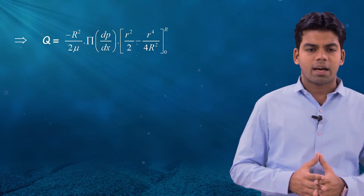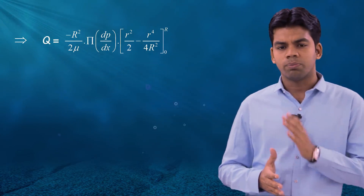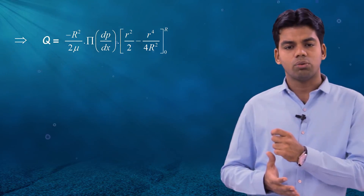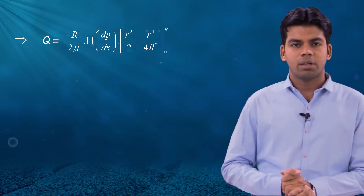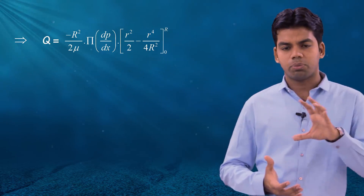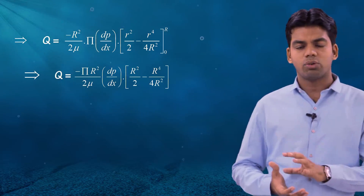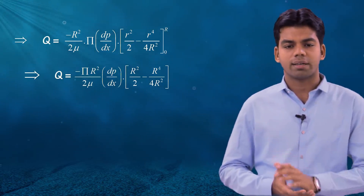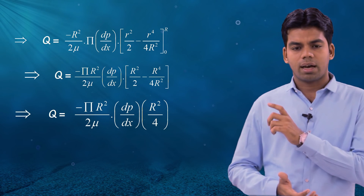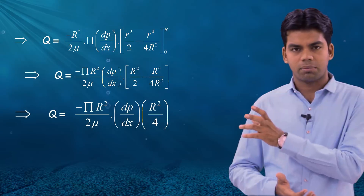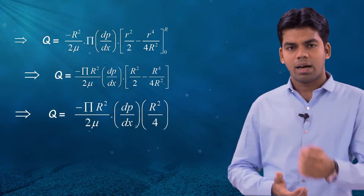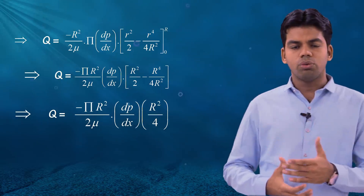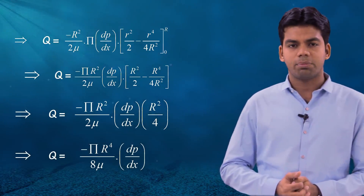Integrating: Q = −(πR²/2μ)(dp/dx) × [r²/2 − r⁴/(4R²)]₀ᴿ. Substituting the limits, we get Q = −(πR²/2μ)(dp/dx) × (R²/2 − R²/4). The term R²/2 − R²/4 equals R²/4.